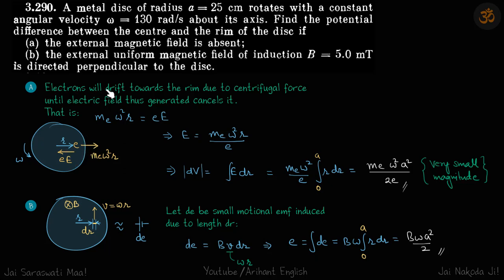Here the electrons will drift towards the rim due to centrifugal force because it is rotating until electric field thus generated cancels it. That is, me*omega^2*r becomes equal to electrostatic force e*E.